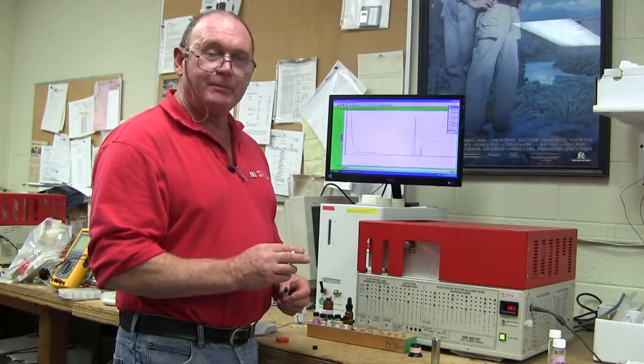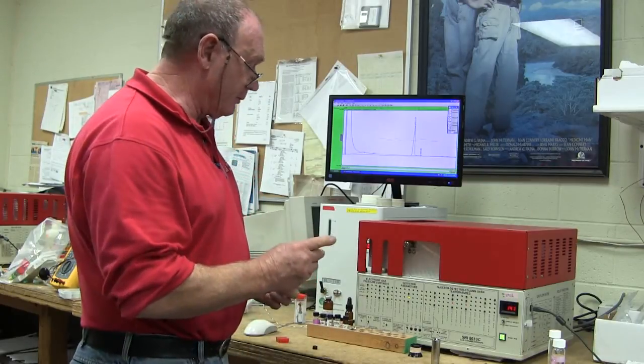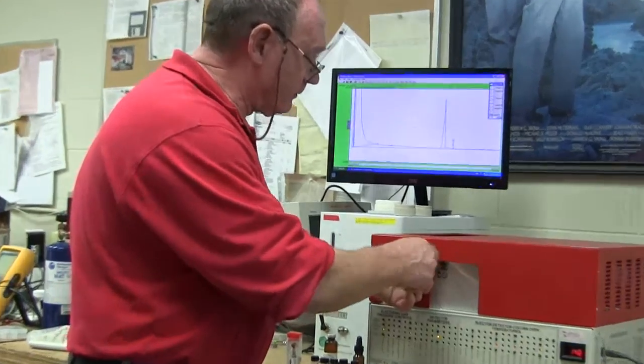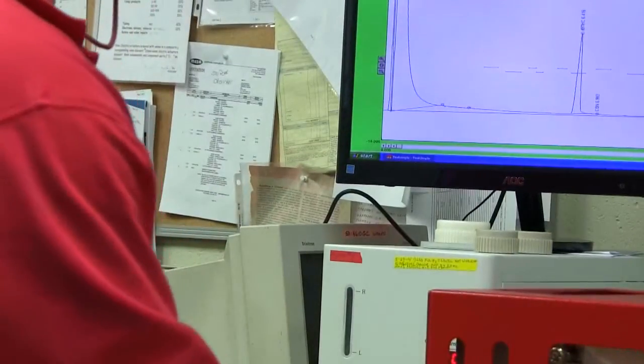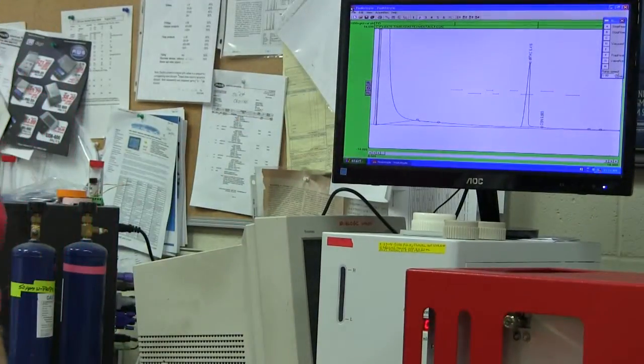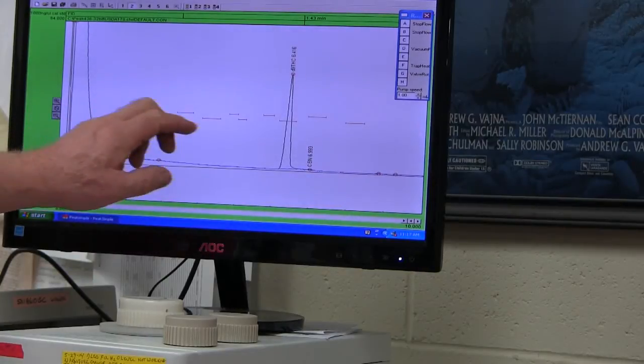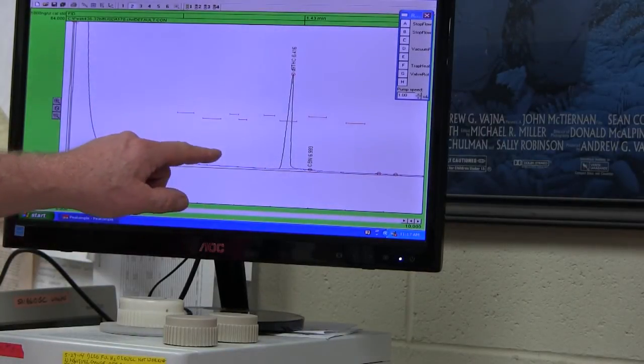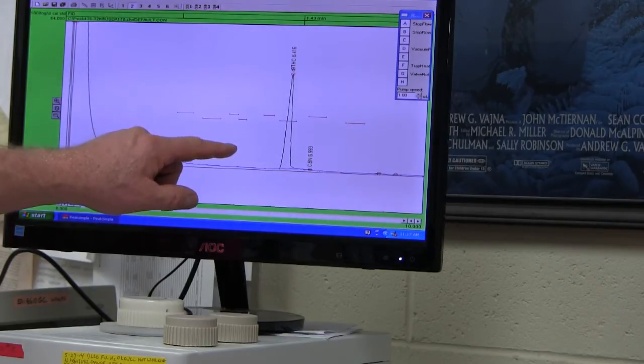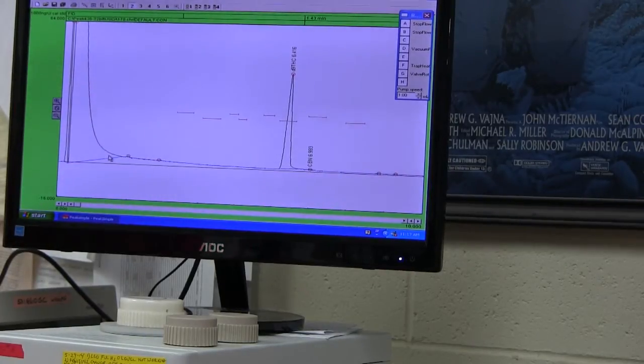So the next step is to get the THCA standard and inject that into the GC with no prior derivatization. So here I'm going to do that. And that results in a chromatogram that looks like this. So the THCA peak will decarboxylate in the heated injector of the GC, and you will see a peak that comes out at the same time as the delta-9-THC standard.